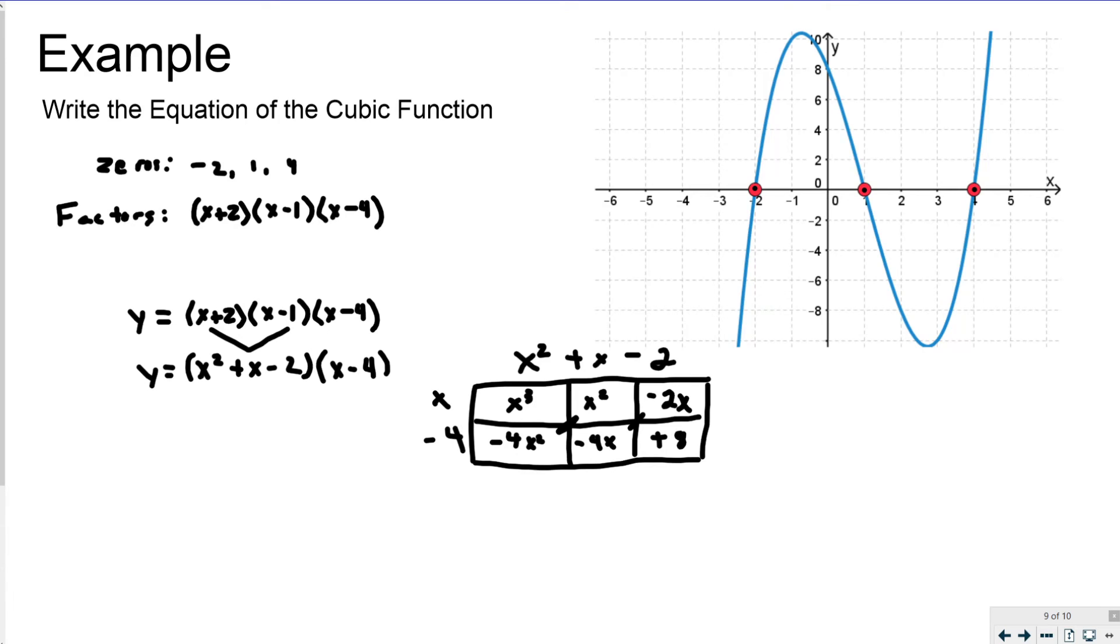And if you look, that positive 8 is going to represent my y-intercept up here, which was (0, 8). So that's perfect. I should get the same number that my y-intercept is that I already know and can identify off the graph. I should get it as my final box here.